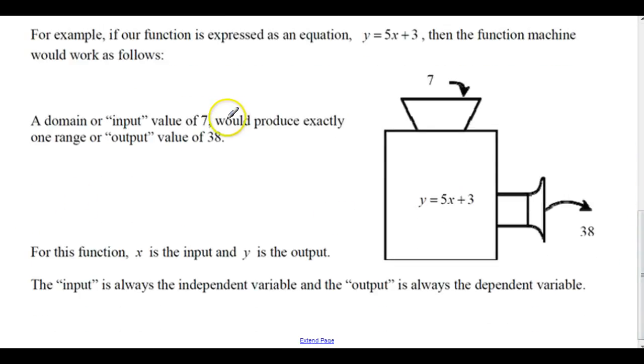A domain, or input value of 7, goes into the machine, which then does the math, right? So 5 times 7 is 35, plus 3 is 38, gives you the output value. So 7 can only produce 38, no other number.